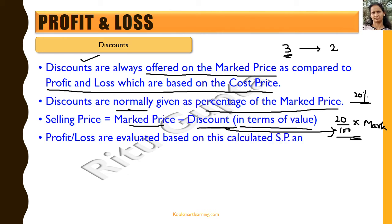Profit and loss are evaluated based on this calculated selling price and the cost price. So after removing the discount from the marked price you get the selling price, and then based on this selling price and the cost price of that commodity, you will get the profit and loss.